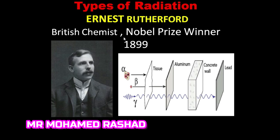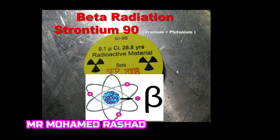The three types of radiation are alpha radiation, beta radiation, and gamma radiation. The alpha radiation stops at the surface of any tissue. The beta radiation can be stopped by aluminum or plastic shields. The gamma radiation can be stopped by lead.